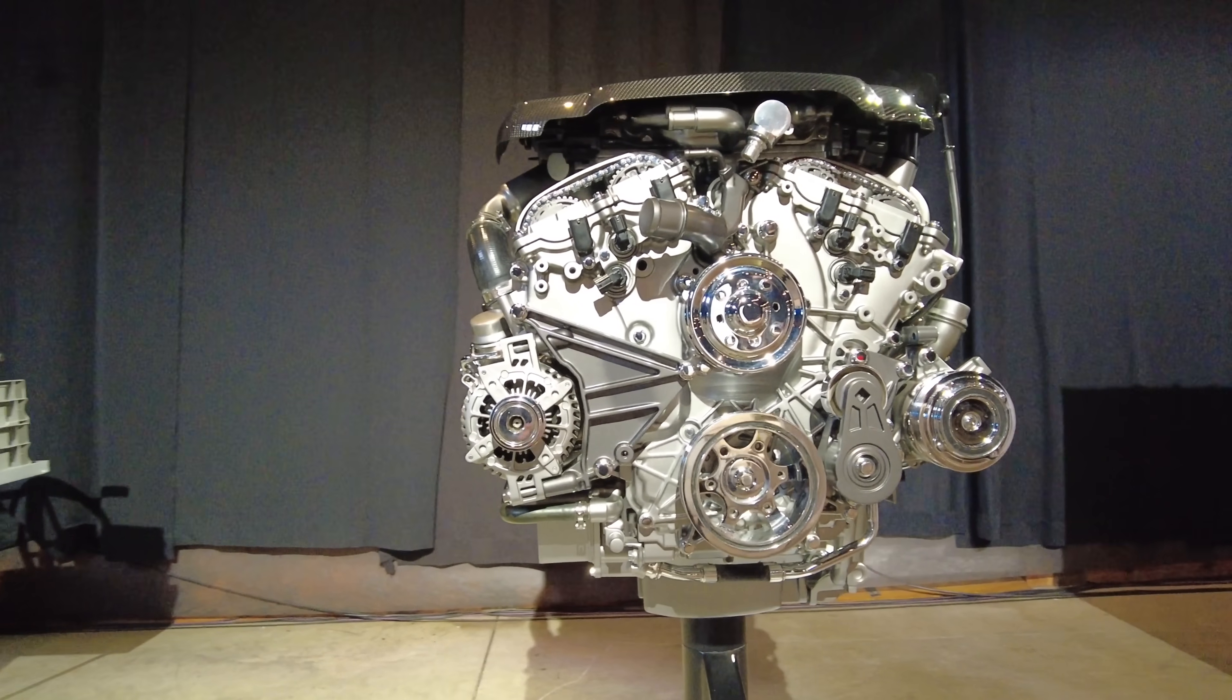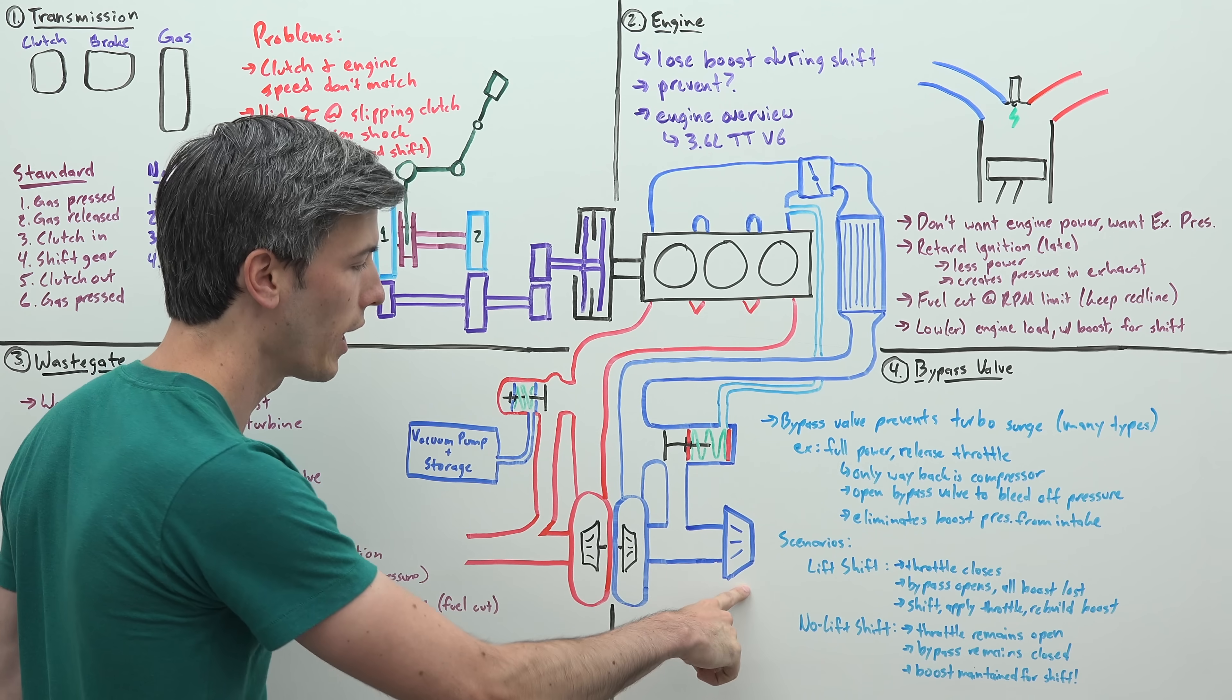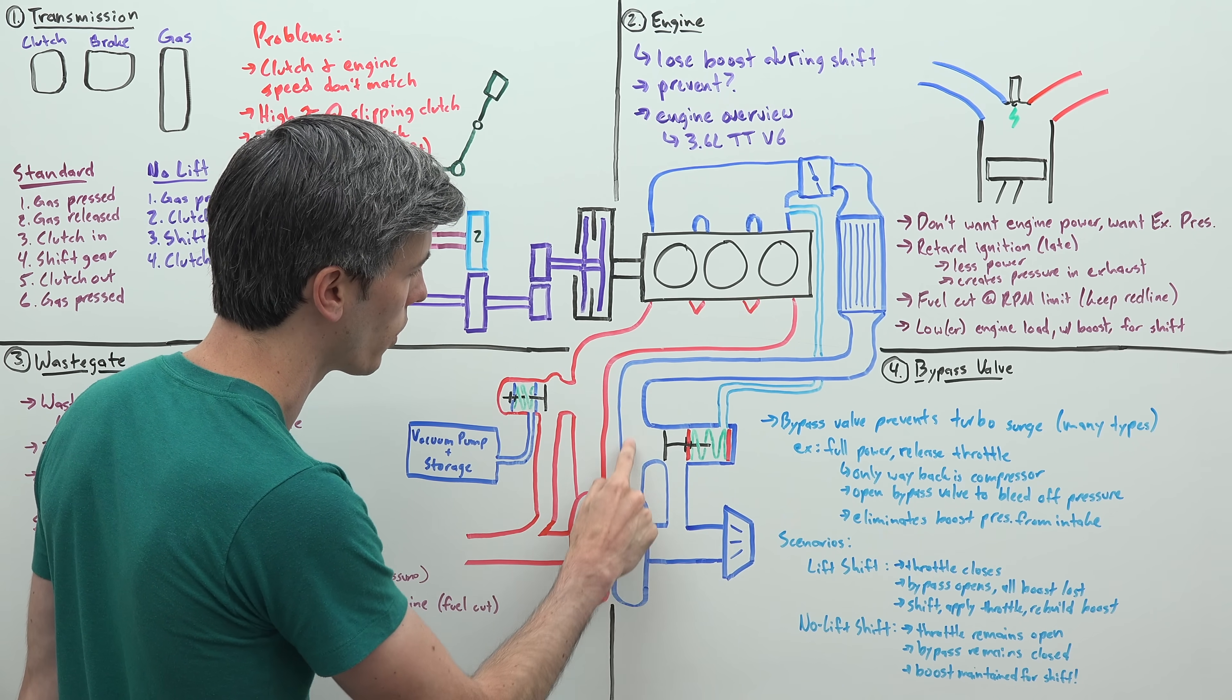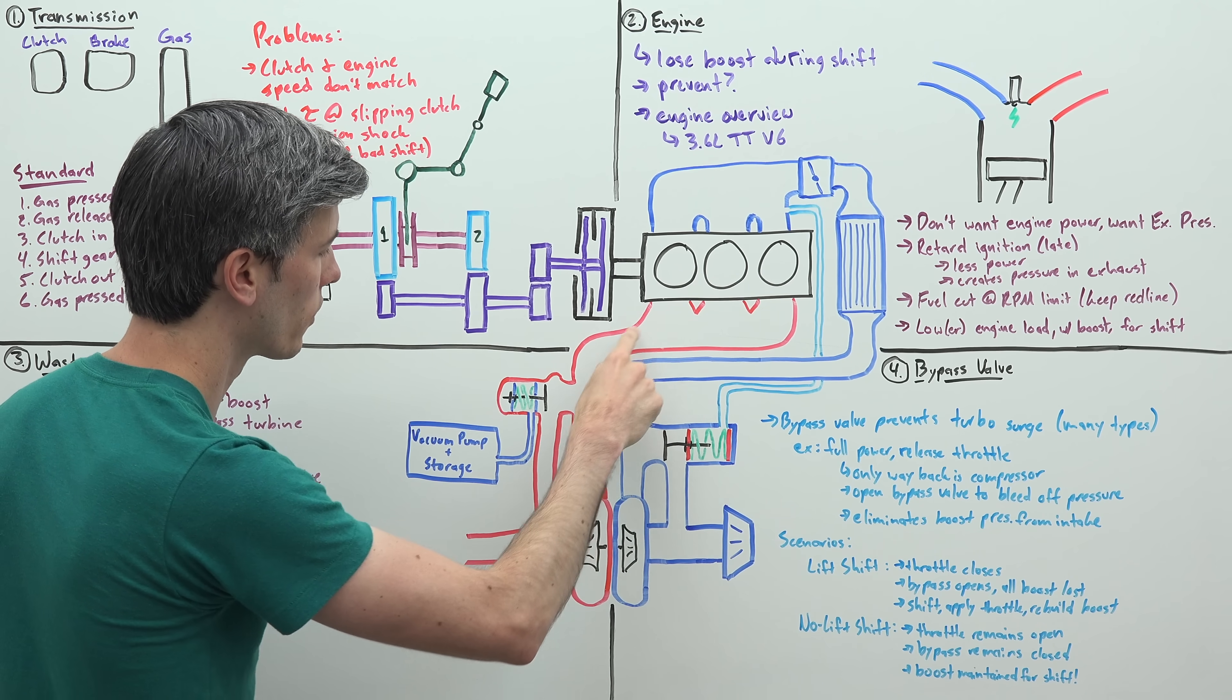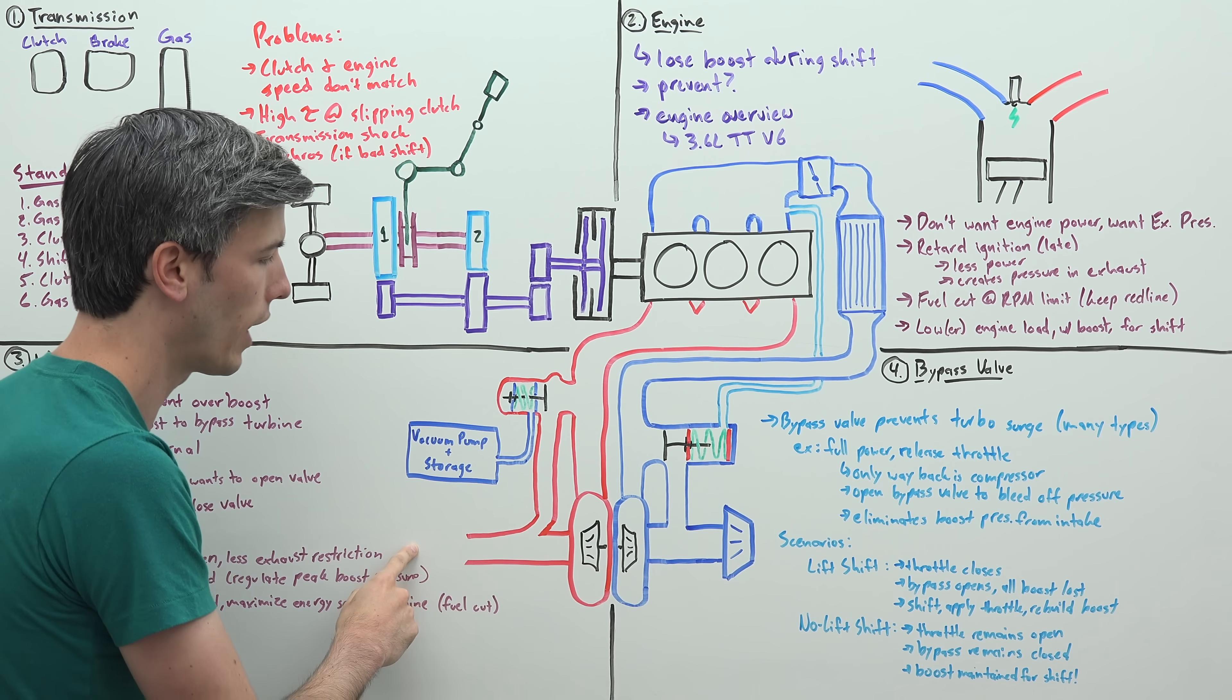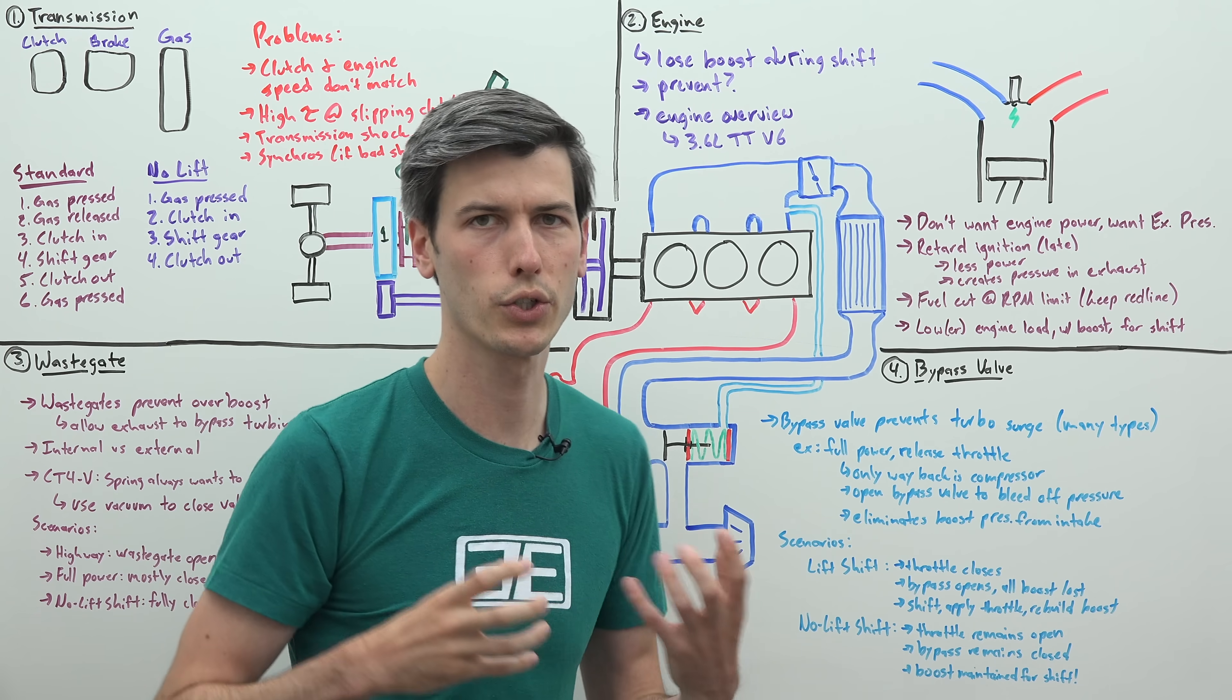It's not an exact replica of what we have with the 3.6 liter in the CT4V Blackwing. So we have our air intake up front. That air passes through the compressor side of our turbocharger, travels along, passes through an intercooler, goes through your throttle, then into your engine, comes out the exhaust, passes through the exhaust portion of the turbocharger, and then leaves out your exhaust.